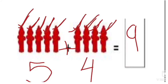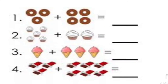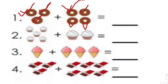So dear children, to understand addition we will solve some more examples. Are you ready? Let's start. See the first question — how many doughnuts are here? Let's count: one, two, three — three doughnuts. And how many doughnuts do we add? One, two, three, four. So how many doughnuts altogether? One, two, three, four, five, six, seven — the answer is seven.